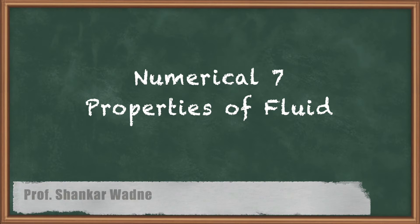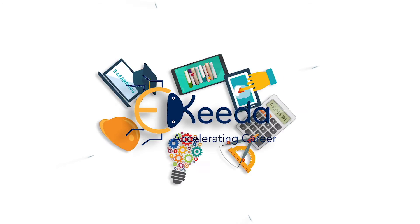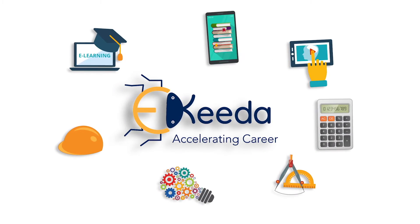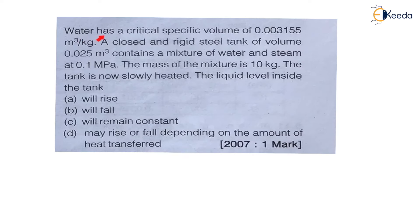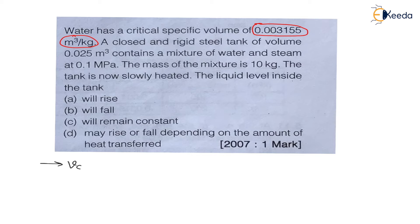Now the question states: Water has a critical specific volume of 0.003155 m³ per kg. The meaning of critical specific volume is the volume at the critical point. Critical specific volume VC is 0.003155 m³ per kg, which is the volume at the critical point.